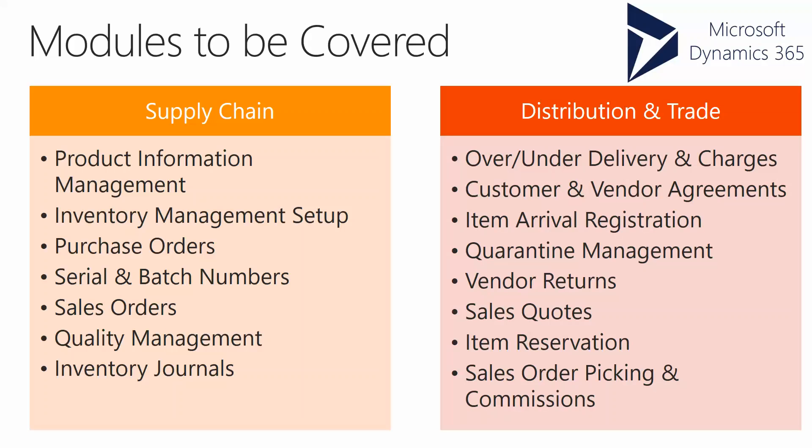This section also covers customer and vendor agreements, how to start working with item arrival and registration from inventory and warehouse management, vendor returns, and processing returns to vendors using Return Material Authorization (RMAs). We'll also look at sales quotations to existing prospects and existing customers, and how we can handle item reservations — both manual and automated — for sales orders.